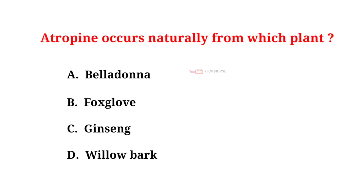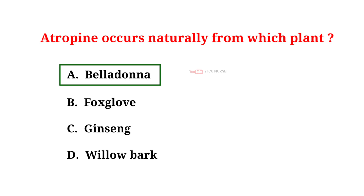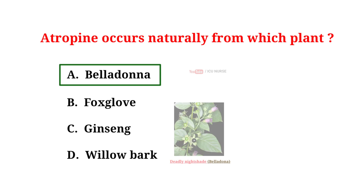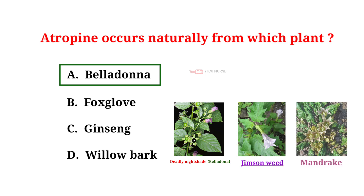Atropin occurs naturally from which plant? A. Belladonna, B. Foxglove, C. Ginseng, D. Willow bark. The correct answer is A. Belladonna. Atropin occurs naturally in a number of plants of the nightshade family, including deadly nightshade — i.e. belladonna — Jimson weed and mandrake.